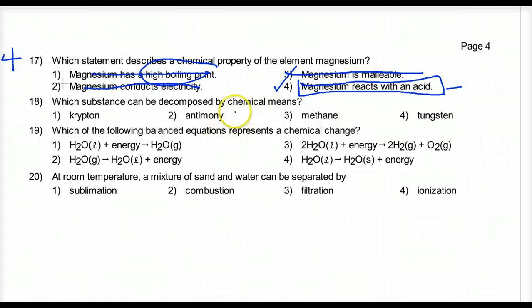Eighteen. Which substance can be decomposed by chemical means? Krypton. Antimony. These guys are elements. Tungsten element. This is kind of an unfair question. But methane. I would give you this question with chemical symbols. Methane is CH4. The rest of these are elements with only one capital. So three is the best answer. I wouldn't do that to you yet.